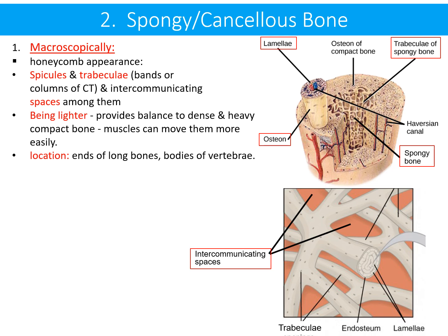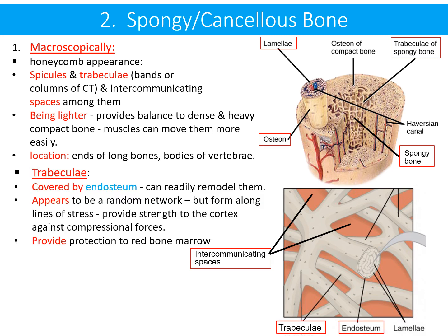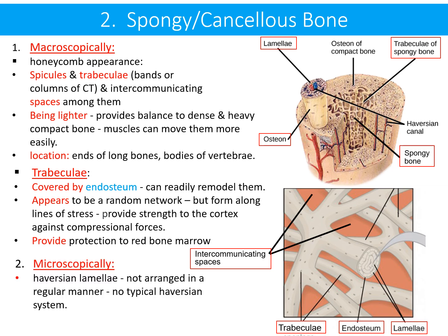Spongy bone tissue is located especially at the ends of long bones and in bodies of the vertebrae. The trabeculae are covered by endosteum and can readily remodel. Although they may appear as a random network, they form a specific arrangement along lines of stress, providing strength against compressional forces and also protecting the red bone marrow. Microscopically, Haversian lamellae are not arranged in a regular manner and no typical Haversian system is present.